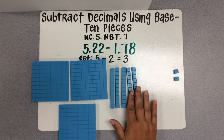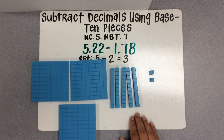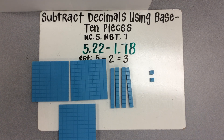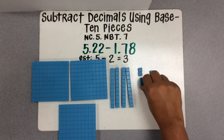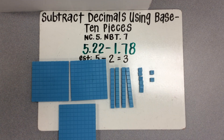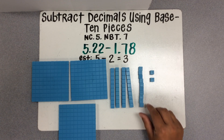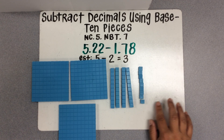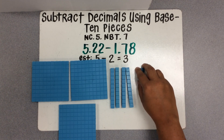Now we have 8 hundredths that we need to subtract. I see just 2 hundredths here. However, I know that in these 3 wholes and 5 tenths, there are a lot of hundredths. So I can ungroup one of these tenths for 10 hundredths to be able to subtract. I'm going to take 1 of these tenths and ungroup it for 10 hundredths. So there I ungrouped 1 tenth for 10 hundredths. Now I can go ahead and take away the 8 hundredths. So I've subtracted the 8 hundredths as well.